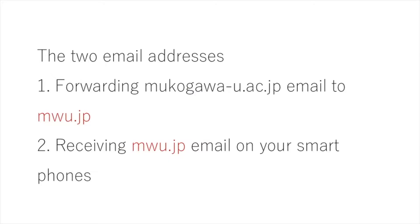You have two email addresses when you work at Mukogawa. The first one is your official work email, which is the mukogawa.ac.jp email. You cannot receive this on your smartphone even if you try to set it up. So I recommend forwarding it to your other email, which is the mwu.jp email. I will talk about forwarding the first email to the second email, and then about receiving the second email on your smartphones.